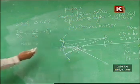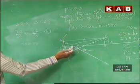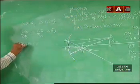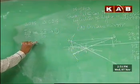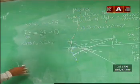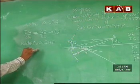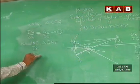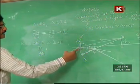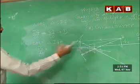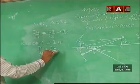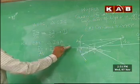Next, we consider another two triangles: triangle ANF and triangle IGF. In this case, IG by AN is equal to IF by NF. This is equation number 2.